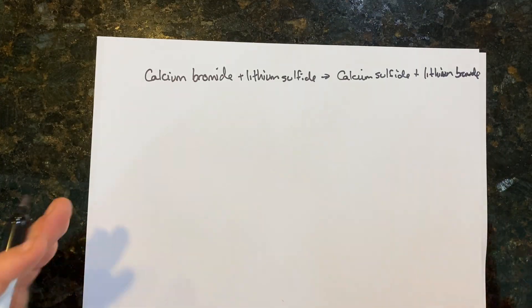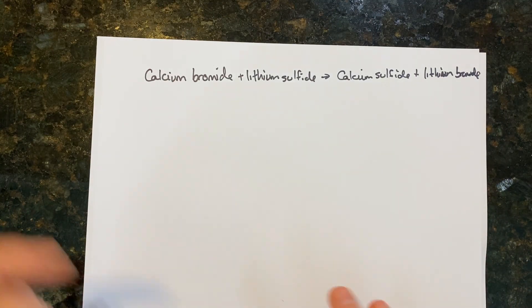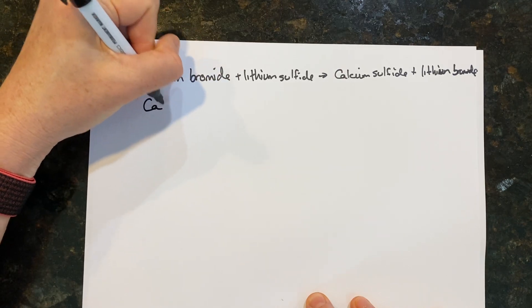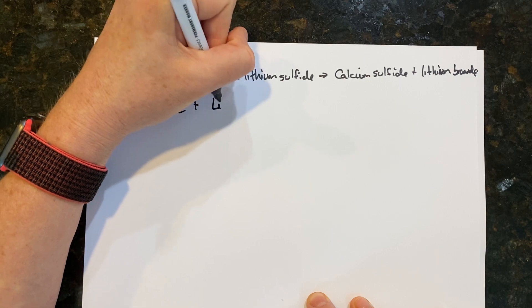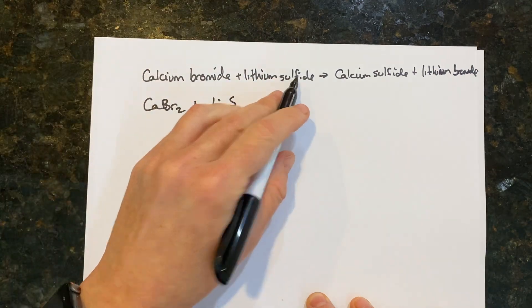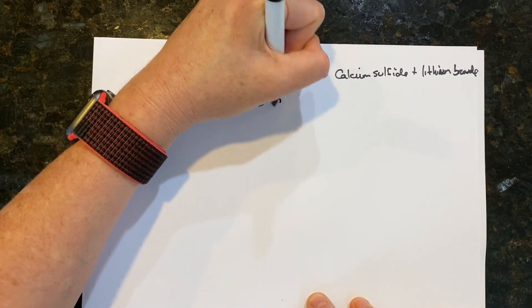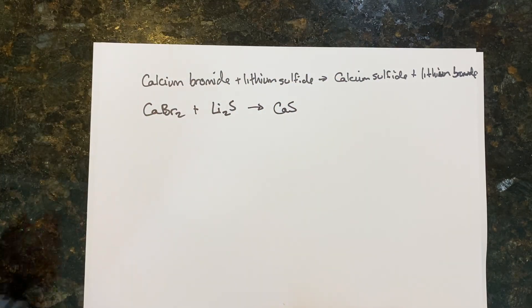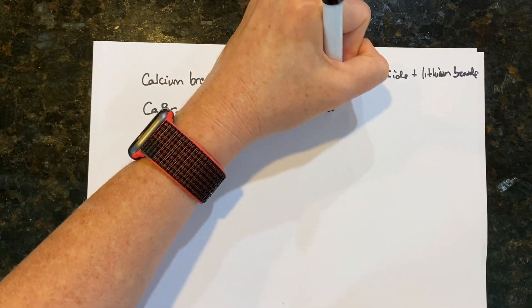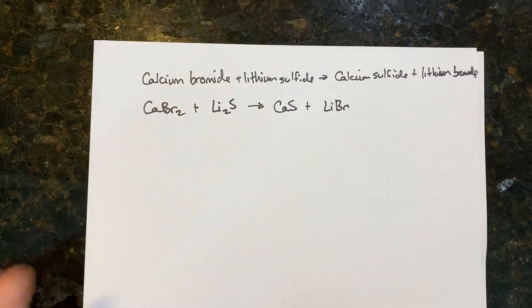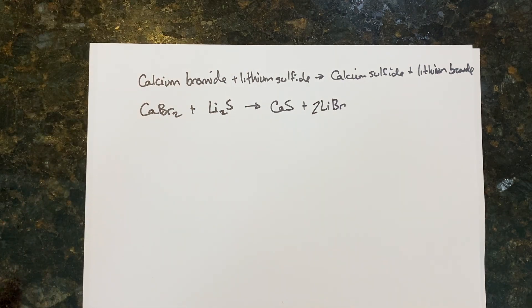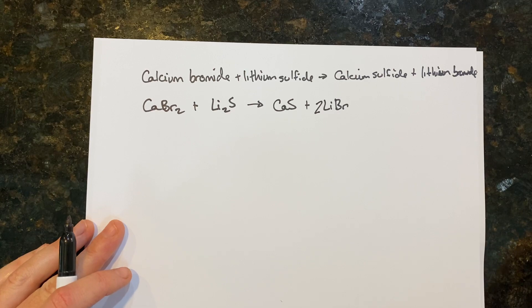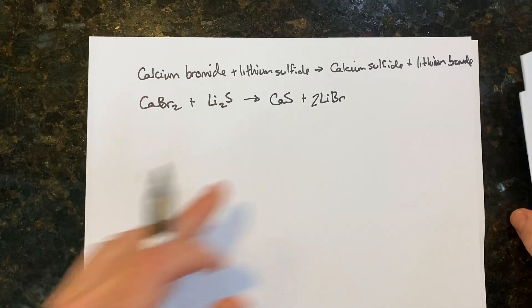Let's write it out. Calcium bromide is CaBr₂; lithium sulfide is Li₂S — don't confuse it with sulfate. This would react to form calcium sulfide, CaS, plus lithium bromide, LiBr. Balancing by putting a 2 in front of LiBr — that looks balanced.